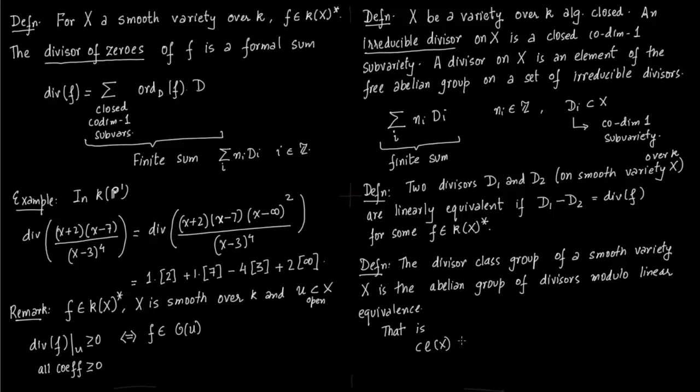The divisor class group of a smooth variety X is the abelian group of divisors modulo linear equivalence. So the class of X is nothing but the cokernel of the map: you go from k(X)* to apply divisors to divisors on X. And divisors on X, I have already explained to you, is you just take codimension-1 varieties and keep on attaching integers to it. Now we will discuss an example soon when X is equal to P^1 and see what the class of P^1 is.